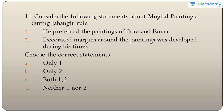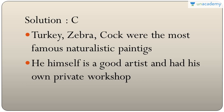Question eleven: statements about Mughal paintings during Jahangir's rule — he preferred paintings of flora and fauna, and decorated margins around paintings were developed during his time. Both are true. The answer is C — both one and two. Turkey, Zebra, and Cock were the most famous naturalistic paintings during Jahangir's time. He was himself a good artist and had his own private workshop.